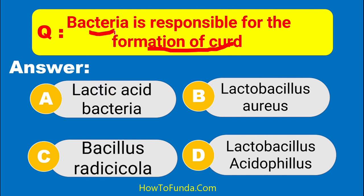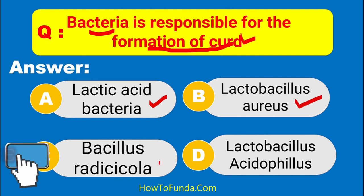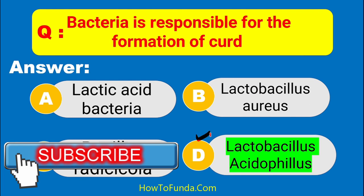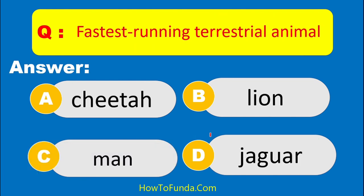Is it lactic acid bacteria, Lactobacillus aureus, Bacillus radicicola, or Lactobacillus acidophilus? The answer is D — Lactobacillus acidophilus produces curd. Which is the fastest running terrestrial animal?